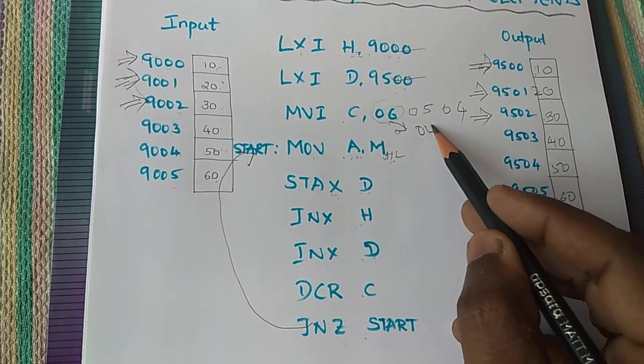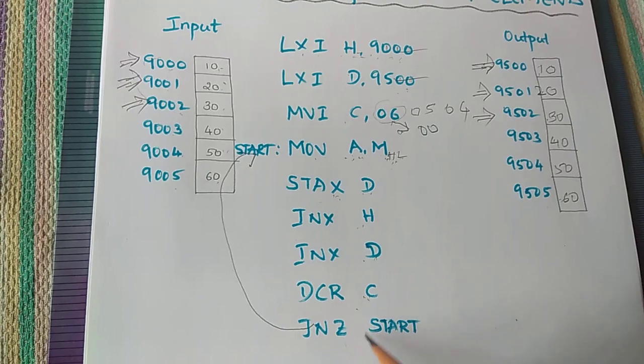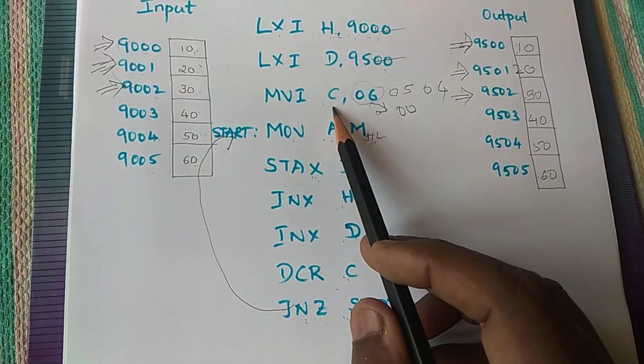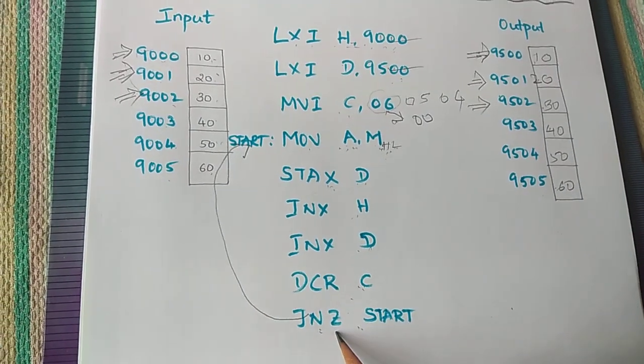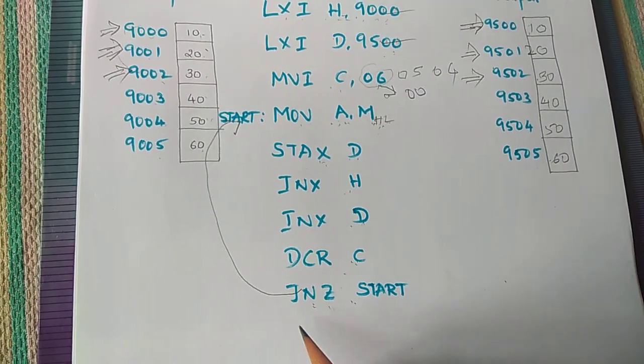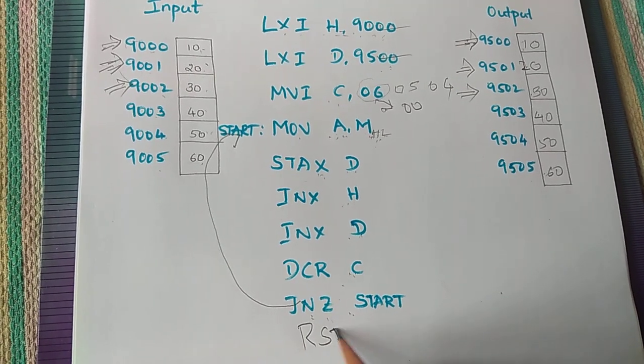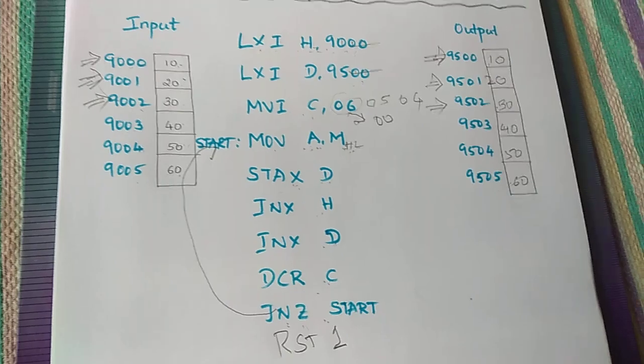C becomes 0, it will check. DCR C, then JNZ start, jump on no zero. So unless C is not 0, it will jump. Once C becomes 0, it will come out of the loop. Then we will write RST 1. So this is how the program works. Thank you.